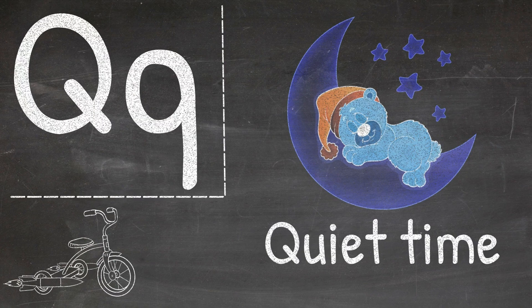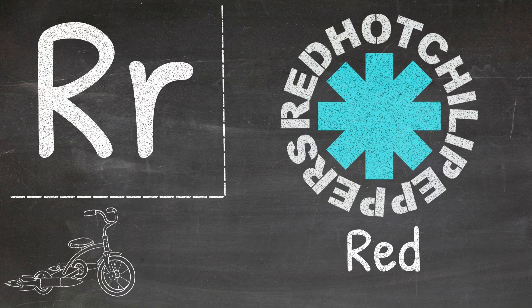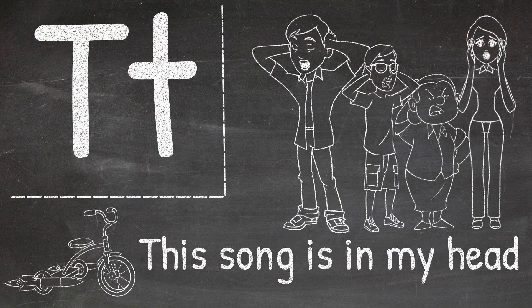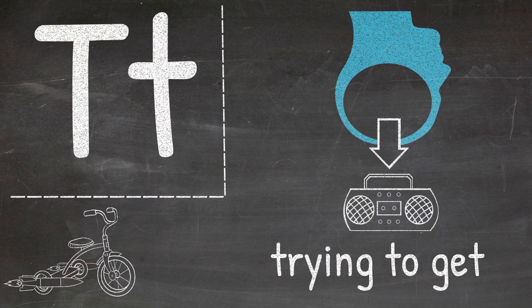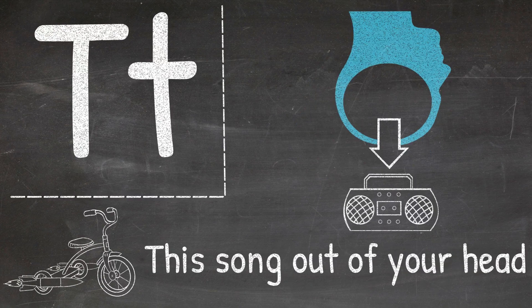Q is for quiet time, R is for red, S is for silliness, T is for the song is in my head, the song is in my head, T is for trying to get the song out of your head.